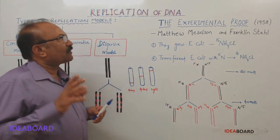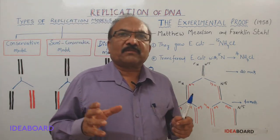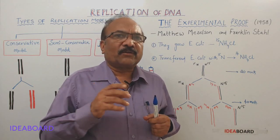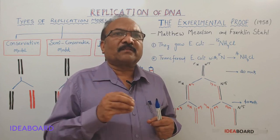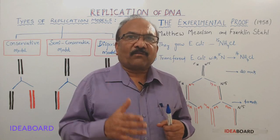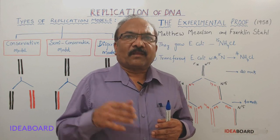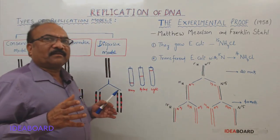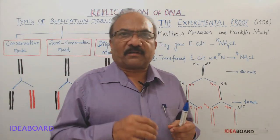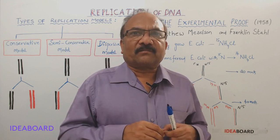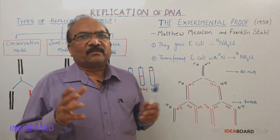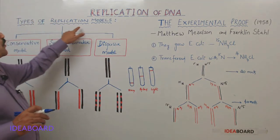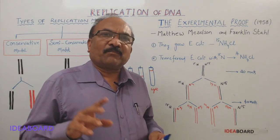As soon as Watson and Crick proposed the double helical model for DNA, the entire scientific community started thinking about replication — how DNA will multiply across generations. They thought of different views, and there are three schools of thought regarding replication. They proposed three different models: types of replication models, not types of replication.